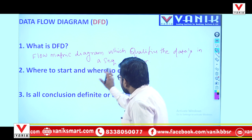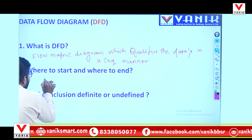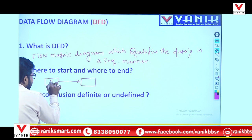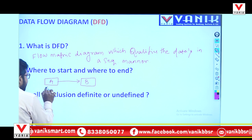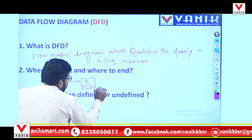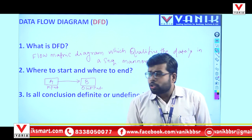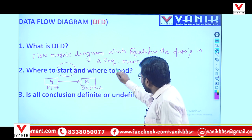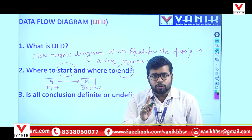Now let's see where to start and where to end. In a flow metric diagram, there are some arrows. If A and B are nodes, and an arrow goes from A to B — then A is my input and B is my output. Always start from input and always end at output.